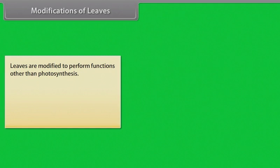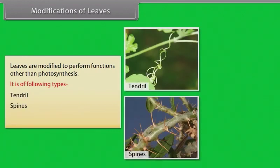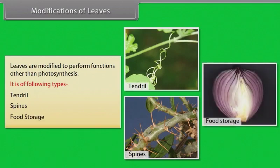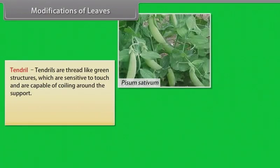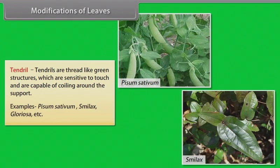Modifications of leaves. Leaves are modified to perform functions other than photosynthesis. These modifications are of the following types: tendril, spines, and food storage. Tendril: tendrils are thread-like green structures which are sensitive to touch and are capable of coiling around a support. Examples: Pisum sativum, Smilax, Gloriosa, etc.